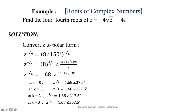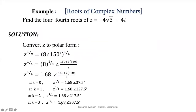The modulus raised to 1/4 and applying k = 0, 1, 2, 3 gives the four roots. The first fourth root (k=0) is 1.68 at argument 37.5°. The second (k=1) is 1.68 at argument 127.5°. The third (k=2) is 1.68 at argument 217.5°. The fourth and last root (k=3, which is n minus 1) is 1.68 at argument 307.5°.